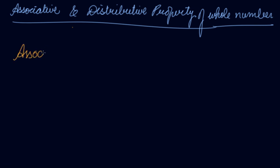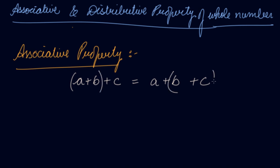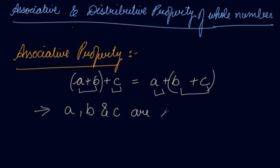What is the associative property? This says that a + (b + c) is equal to (a + b) + c. If you take the brackets on suitable numbers, first solve a + b and then add c to it, or first solve b + c and then add a to it — you will get the same answer. Here a, b and c are whole numbers.